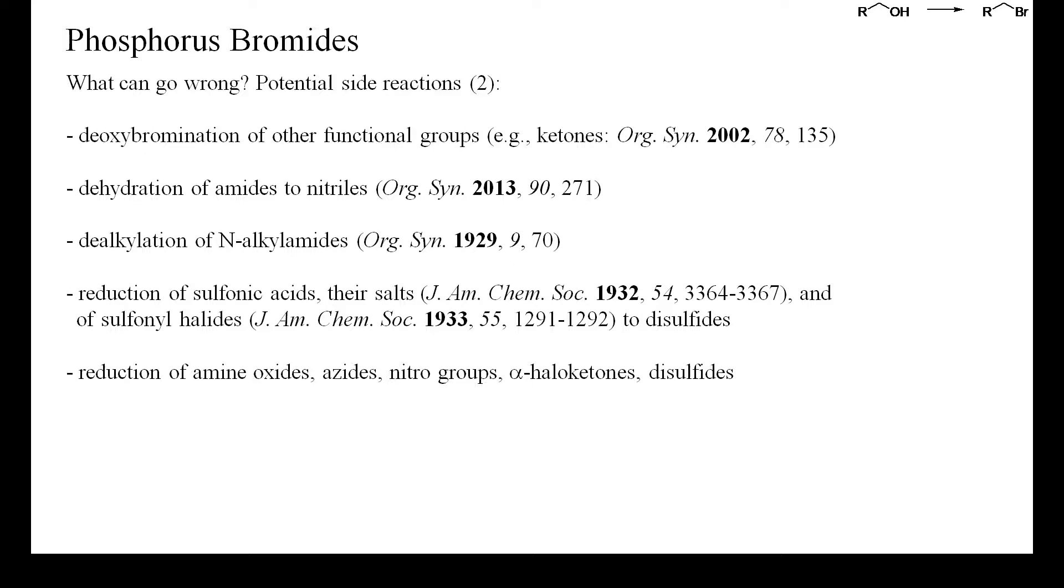Because phosphorus pentabromide and related compounds can release bromine upon slight heating, these reagents can also cause oxidative brominations of electron-rich functional groups in the starting alcohol. These include alkenes, alkynes, electron-rich arenes, and heteroarenes such as pyrroles and indoles, and CH-acidic compounds such as acyl halides, esters, or ketones.